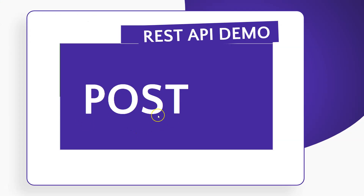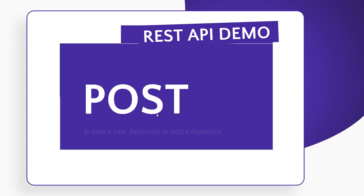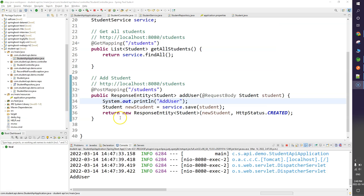Since we don't have any resource yet, we'll work on the POST call first. POST is to create a new resource. Let's go back to the IDE where I've added the code to make the POST call. I've created a function called addUser.